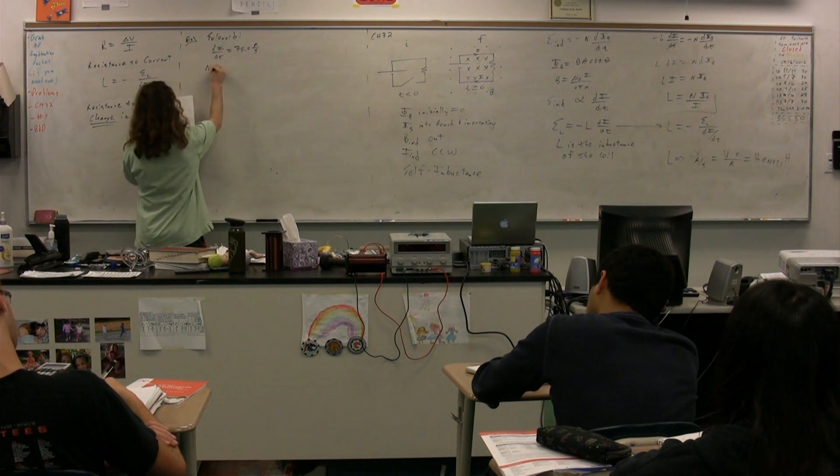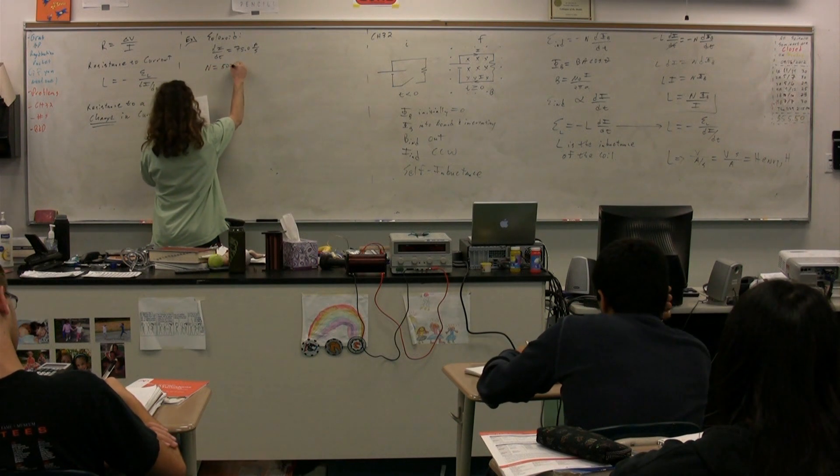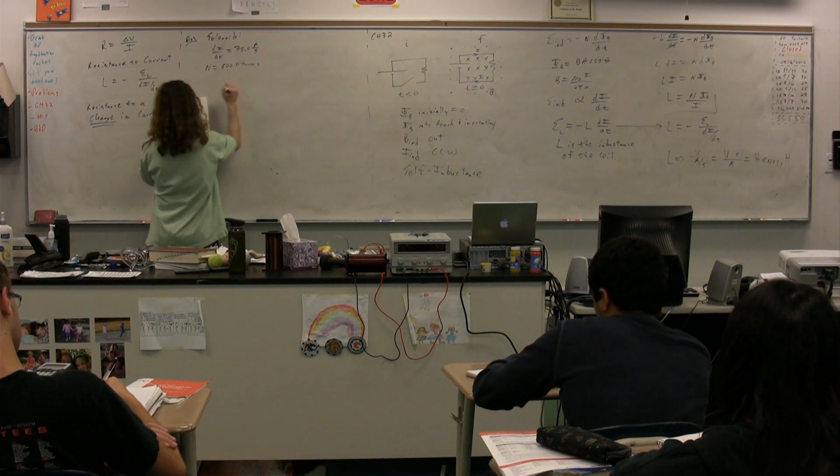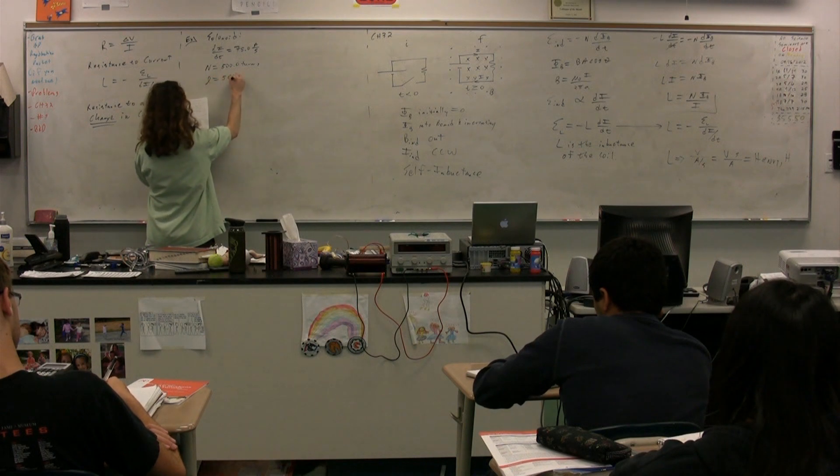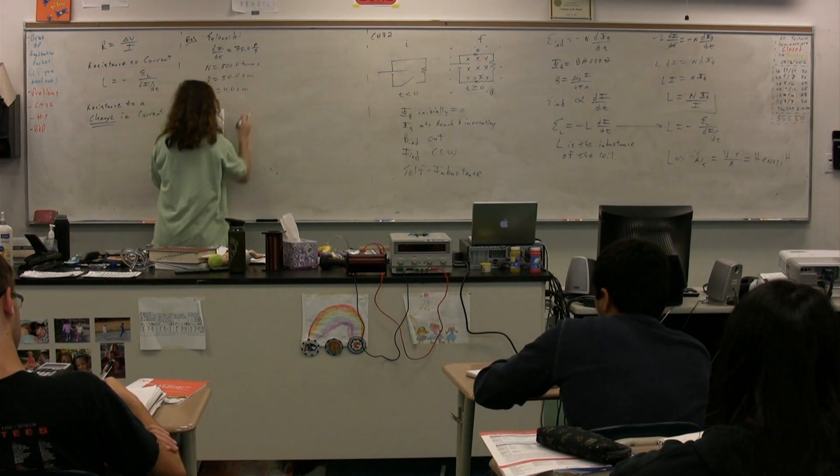We know the number of turns of the solenoid is 500.0 turns. We know the length of the solenoid is 50.0 centimeters. We know the radius of the solenoid is 4.0 centimeters.